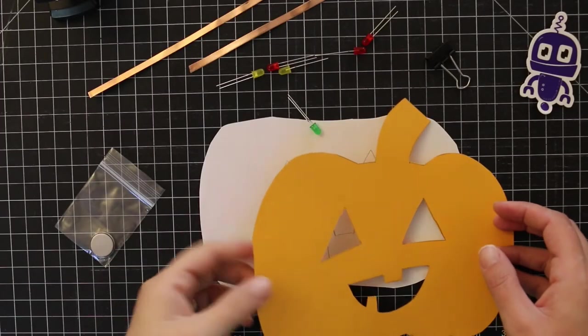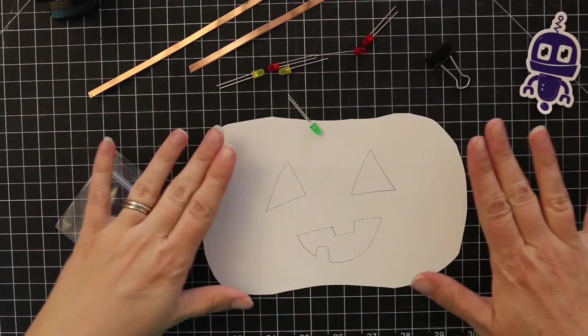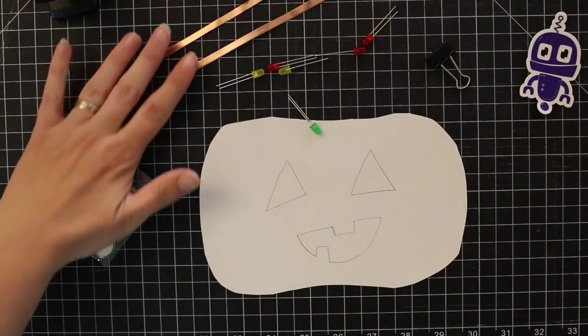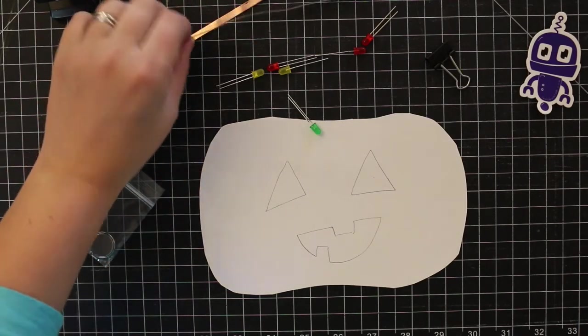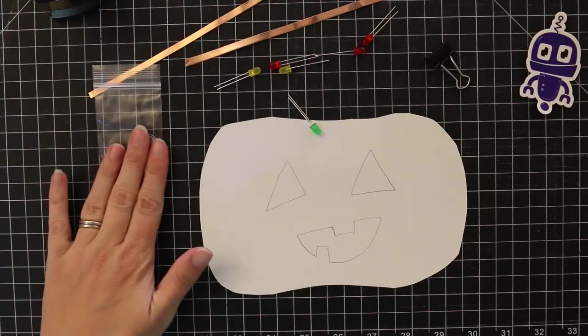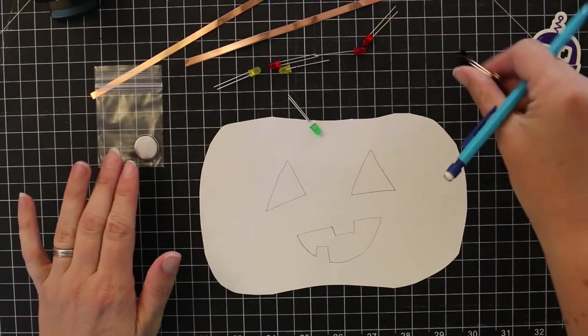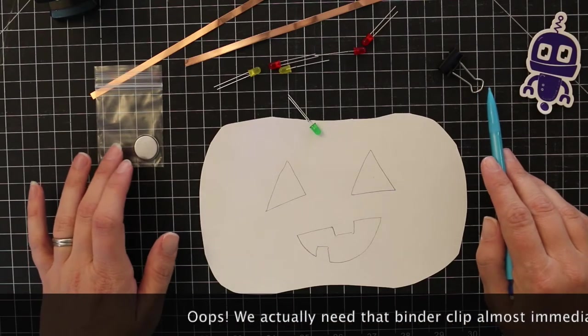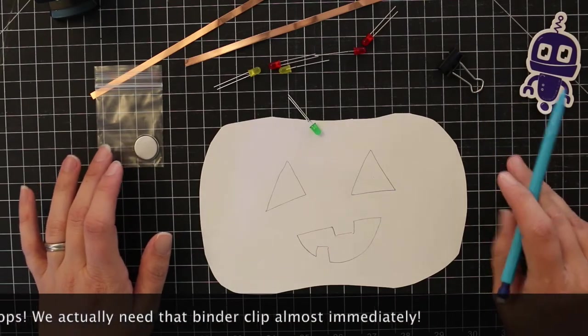We're gonna set our pumpkin aside for now and just use our white paper template. On this we're going to place some copper tape. On top of those we'll place some LEDs and we'll also use our battery. Our binder clip isn't necessary for this part but we will want it if we want to keep our pumpkin on for any length of time.